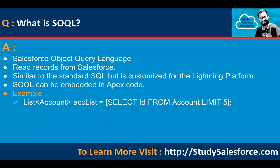What is SOQL? SOQL stands for Salesforce Object Query Language. It reads records from Salesforce, similar to standard SQL, but it is customized for the Lightning Platform. SOQL can be embedded in Apex code. Here is an example: SELECT Id FROM Account LIMIT 5. SELECT is for querying data, then you put field API names comma-separated, then FROM and the SObject API name, and you can apply clauses like LIMIT and WHERE. The return result can be stored in a collection such as a list of account.